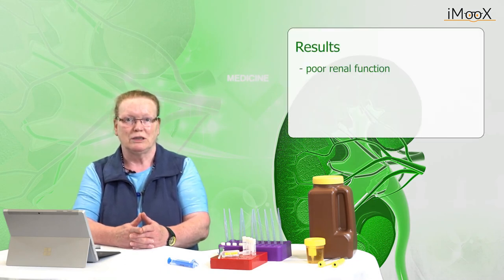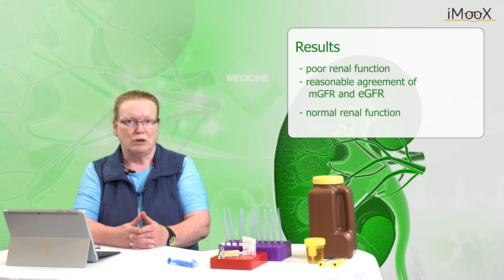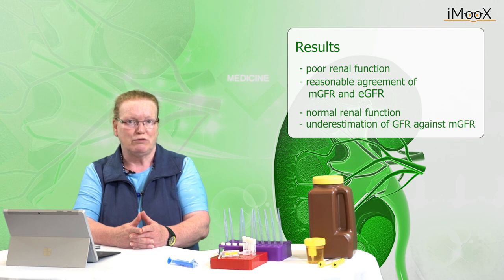In patients with poor renal function, that means GFR below 60 mL per minute, a reasonable agreement of measured GFR and eGFR was observed. Subjects with normal or mildly impaired renal function show an underestimation of GFR based on the formula compared with the measured GFR.